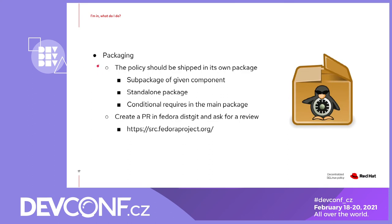After that's done, you just choose an appropriate repository for the policy sources and package them. The packaging guide should help you here — it contains example makefiles, spec files, and all the steps you need to package the policy properly. The policy can be shipped in a sub-package of your component or be completely standalone and linked to your package by conditional requires. The conditional requires is there in order not to pollute containers and other minimal systems that do not have SE Linux enabled. After that, you just create a PR in fedora.distgit and ask us for review.